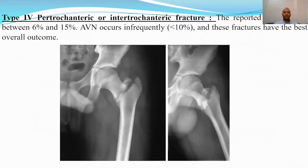Type 4 is the pertrochanteric or intertrochanteric fracture. It has the least incidence, about 6 to 15%, and the AVN rate is less than 10%. This type of fracture has the best overall outcome.